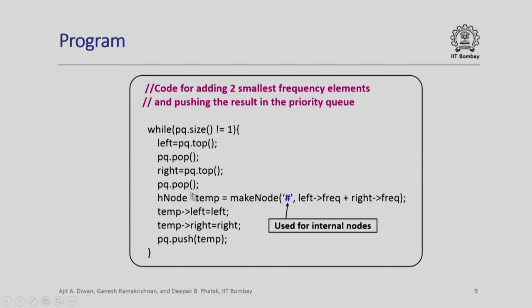What we do now? We actually make a temporary node again, where we have the left frequency and right frequency and please remember we need to now insert an arbitrary character because this node does not represent an actual character in the file. We are arbitrarily using the hash symbol for internal nodes.